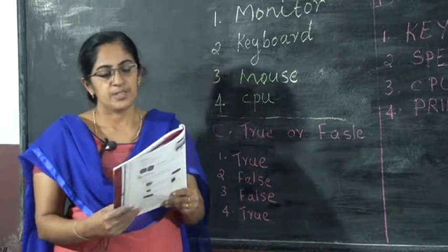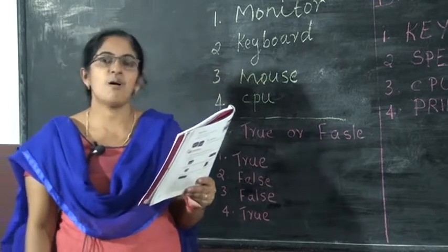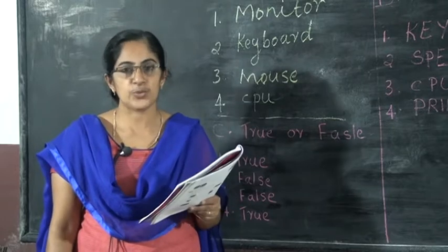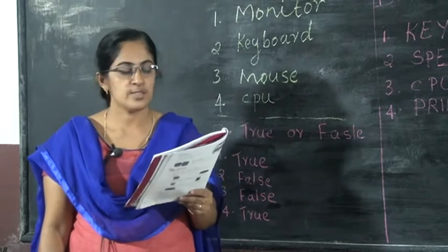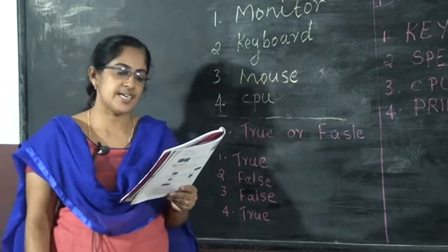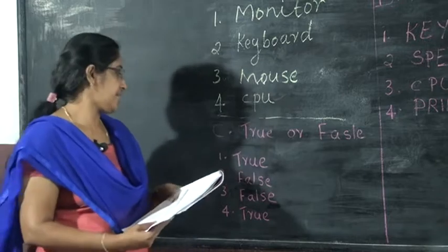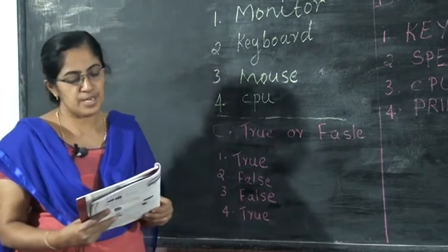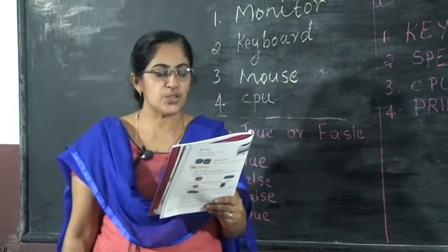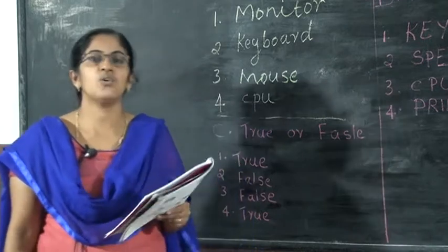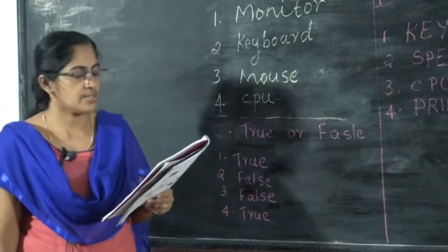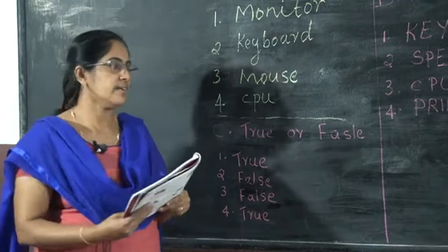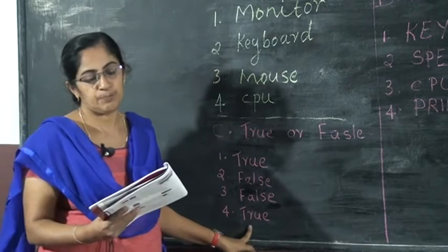Third question: we use a mouse to type letters and numbers. That one is false. Last question: small pictures on the screen are called icons. That one is true.